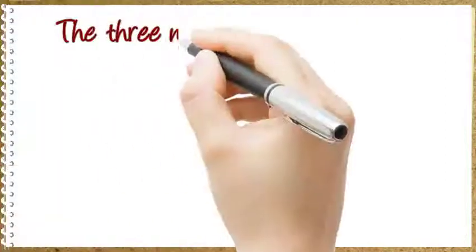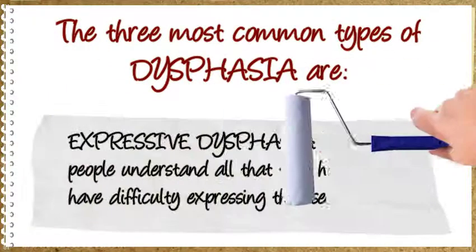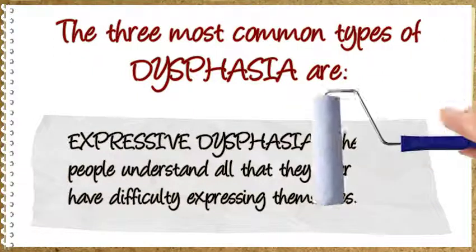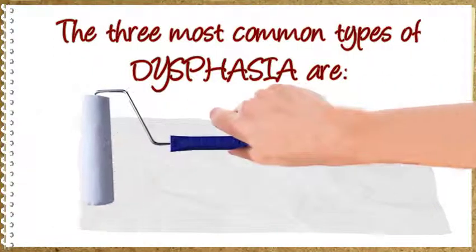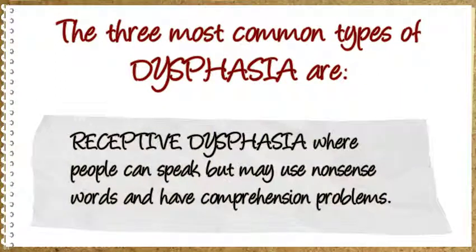The three most common types of dysphasia are: expressive dysphasia, where people understand all that they hear but have difficulty expressing themselves; receptive dysphasia, where people can speak but may use nonsense words and have comprehension problems; and global dysphasia, which involves abnormalities with both expressive and receptive dysphasia.